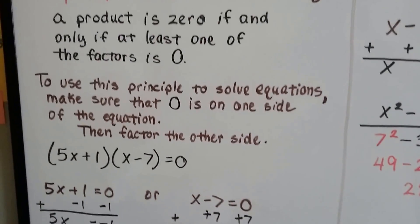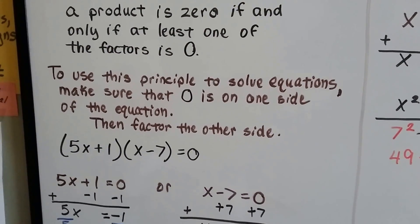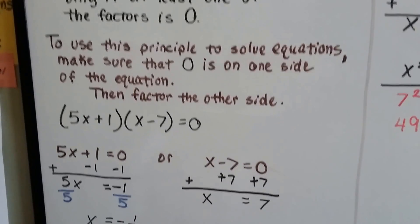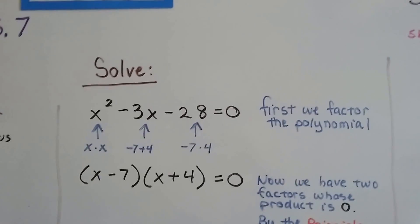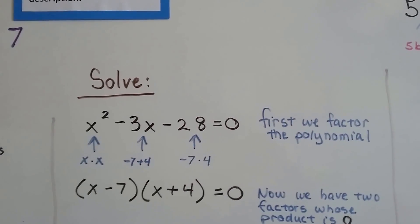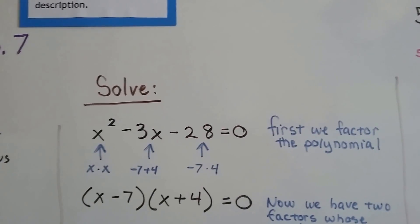Now what we're going to do is factor a polynomial to get it to the point where it's in two parentheses or not. For our first one, we've got x² - 3x - 28 = 0. So the first thing we're going to do is factor the polynomial.